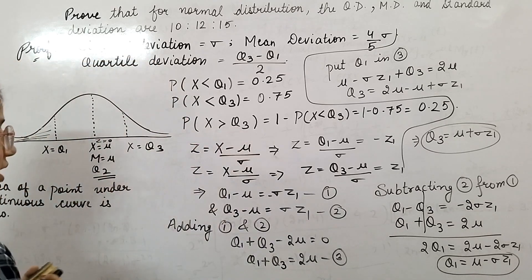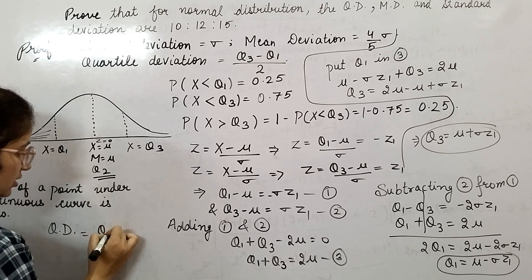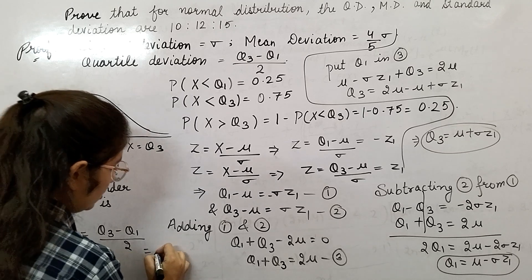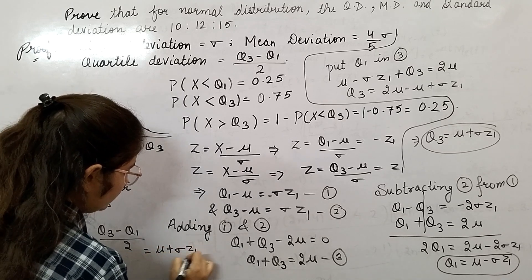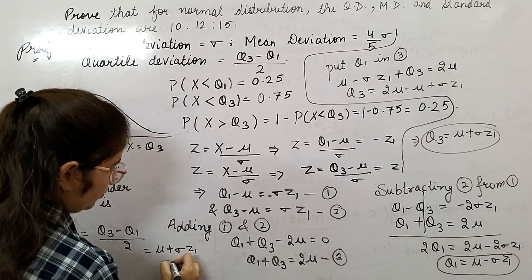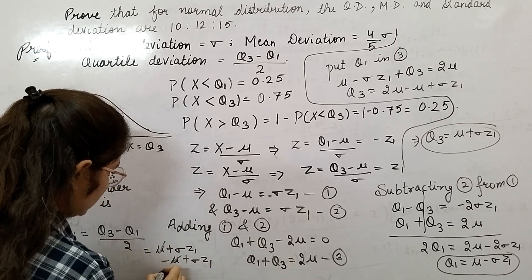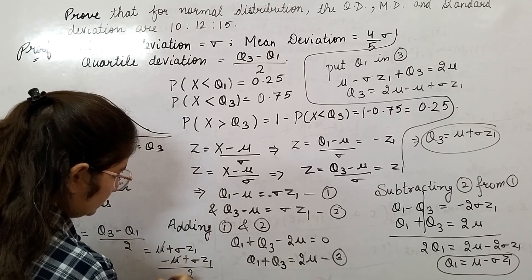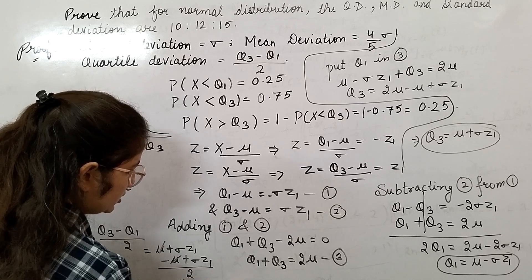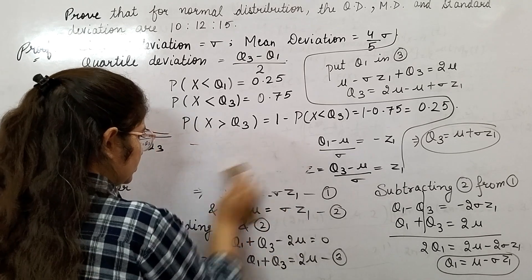Now, what is the formula for quartile deviation? Quartile deviation qd is q3 minus q1 by 2. q3 value is mu plus sigma z1. q1 value is mu minus sigma z1. This and this cancel out each other. Divide by 2, you get 2 sigma z1 upon 2, which is sigma z1.